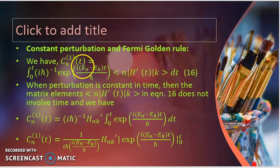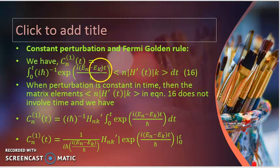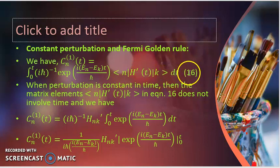Now we will take up the case of constant perturbation, and this will finally lead us to Fermi's golden rule. We have an expression for C_n(t): this is equal to the integral from 0 to t of (i h-cross)⁻¹ exponential i(E_n minus E_k)t by h-cross, and the matrix element ⟨n|H'|k⟩ dt. This is equation 16 from part 1 of the series.